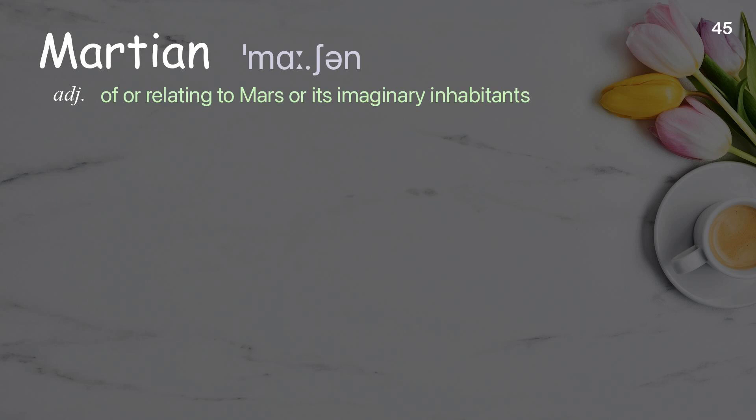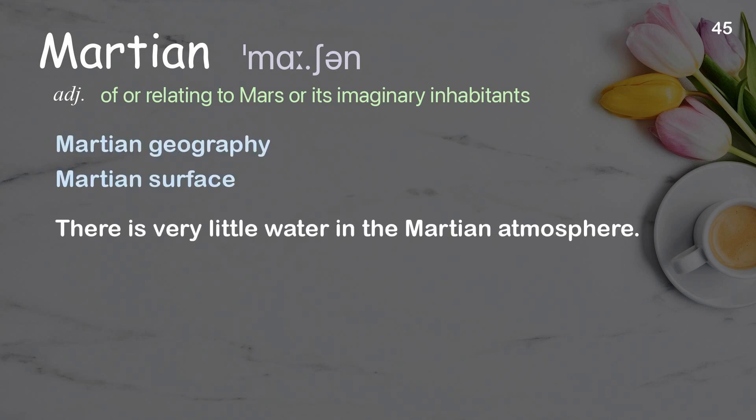Martian: of or relating to Mars or its imaginary inhabitants. Examples: Martian geography; Martian surface. There is very little water in the Martian atmosphere.